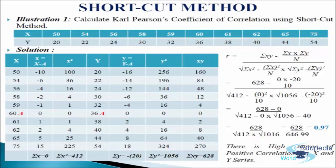We have to make a table of 7 columns. In the first column we will write x variables: 50, 54, 56, 58, 59, 60, 61, 62, 65, and 75. In this particular illustration we have taken 60 as the assumed mean.